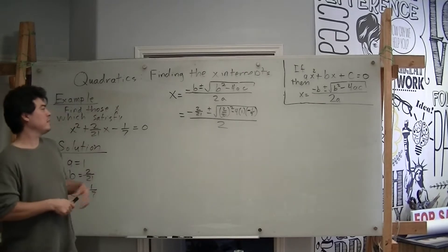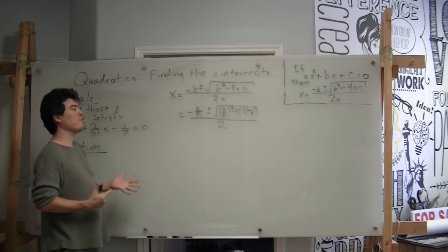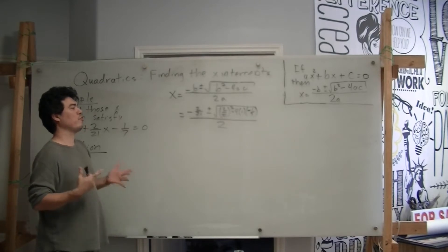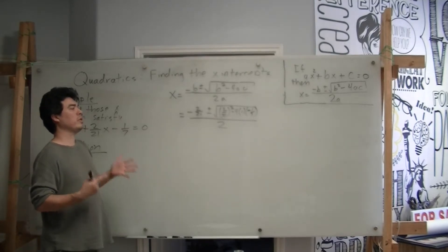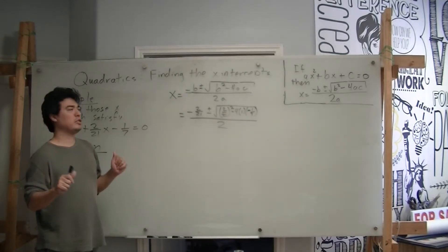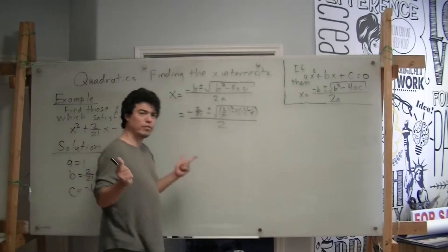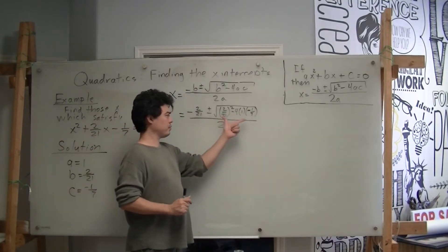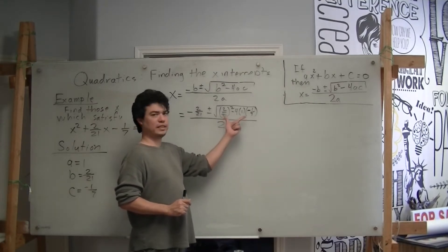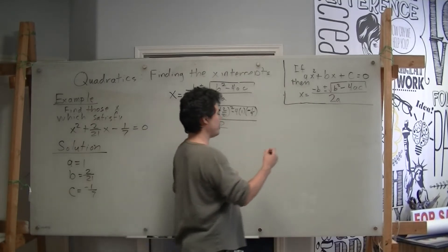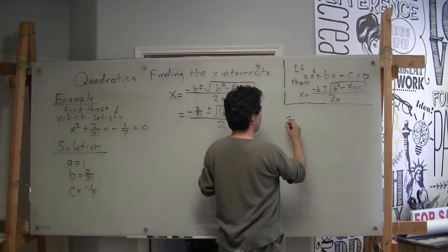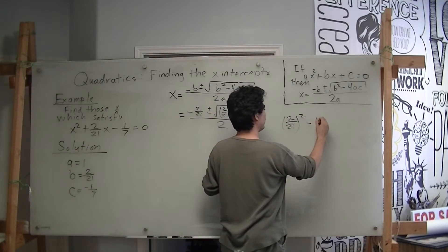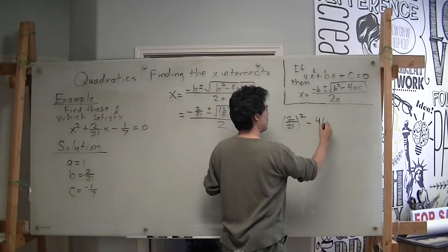So we have this set up: negative 2 over 21 plus or minus the square root of 2 over 21 squared minus 4 times 1 times negative 1 over 7, all divided by 2. The first thing we need to look at is the discriminant — we want to simplify it separately, so we're going to do that here: 2 over 21 squared minus 4 times 1.